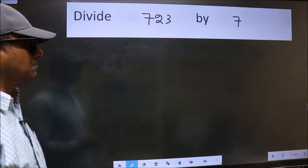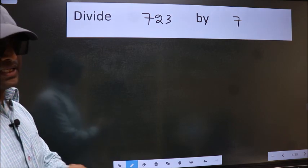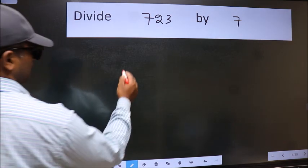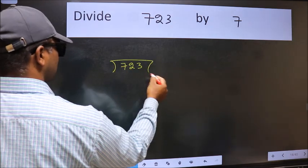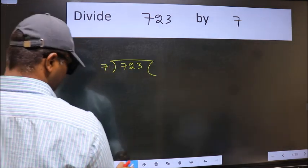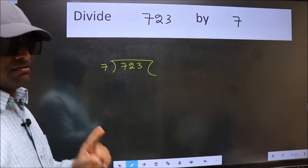Divide 723 by 7. To do this division, we should frame it in this way. 723 here and 7 here. This is your step 1.